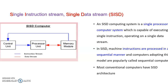Let's see the first one: SISD. SISD stands for Single Instruction Stream Single Data Stream. In SISD architecture there is only one CPU, and only one instruction is processed on data at a time. Here the blue arrow indicates the instruction stream and the red arrow indicates the data stream.